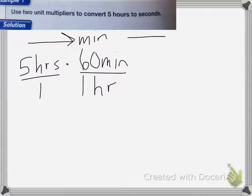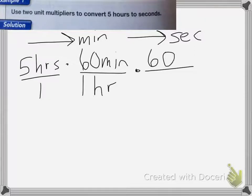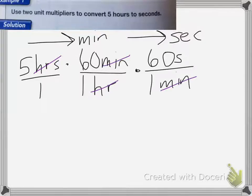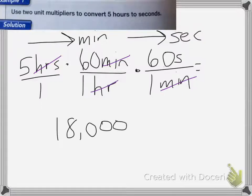Then I need to take those minutes and convert them into seconds. So I'm going to multiply that by 60 seconds over one minute, so that the units can cancel. Hours and hours cancel, minutes and minutes cancel. So now I can multiply five times 60 times 60, which is equal to 18,000 seconds.